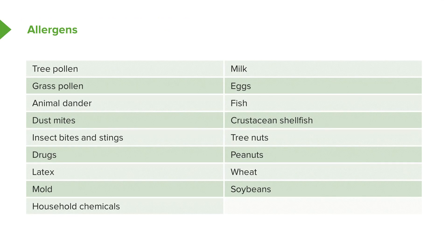Here is a list of allergens — you'll be very familiar with many of these. They include things like pollens, things associated with animals like animal dander, house dust mites, molds, various chemicals, and a number of food allergens.